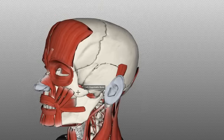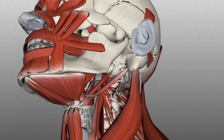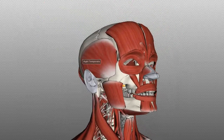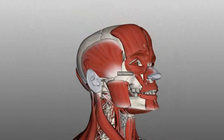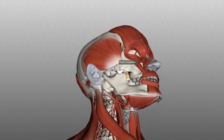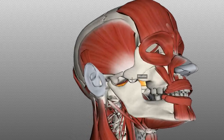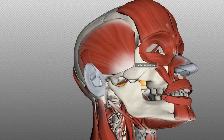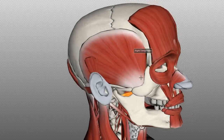The coronoid process is this anterior process here — it inserts just there. Looking at the point of insertion and its origin, you can see that if the muscle were to contract, it would cause the mandible to elevate. It can also pull it back in a posterior direction if you look at the direction of the fibers, so it also causes the mandible to retract.